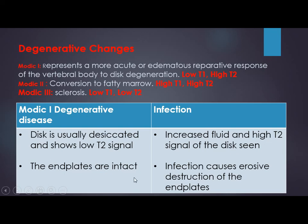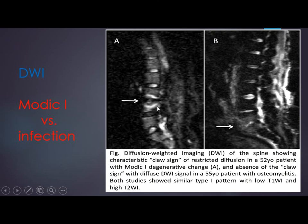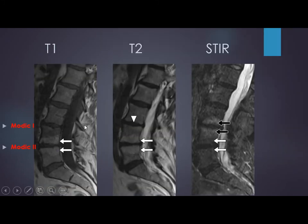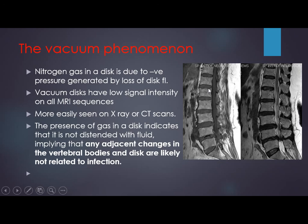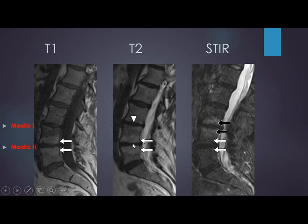On diffusion, we can differentiate Modic 1 from infection by a cleft sign on diffusion in Modic, which is not seen in infection. This case has both Modic 1 and Modic 2. Modic 2 is high on T1, high on T2, suppressed on STIR — representing fat. Modic 1 is low on T1, higher on T2. The disc is desiccated on T2, and not expanded, confirming this is Modic change, not infection.